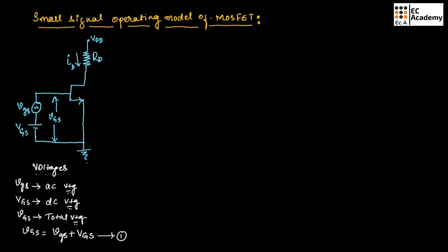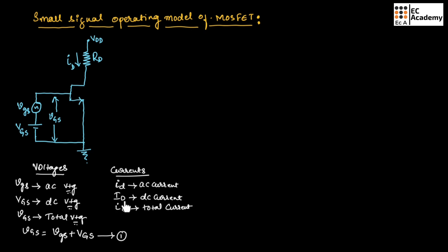Similarly, we have three types of currents: small iD which is AC current, capital ID which is DC current, and small i capital D which is total current. The total current will be equal to small iD plus capital ID. Let us call this equation number 2.